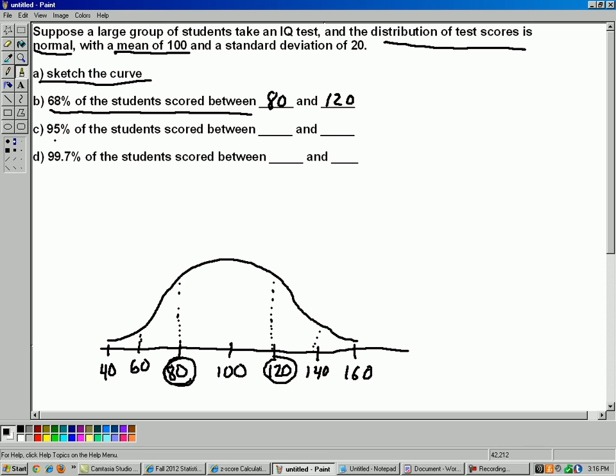Part C, 95% of the students scored between what and what? You can probably guess. They scored within two standard deviations of the mean, so that would be 60 and 140.